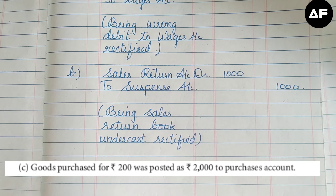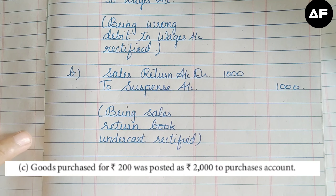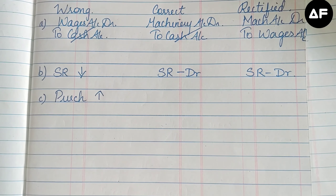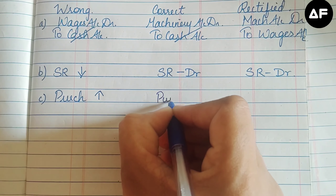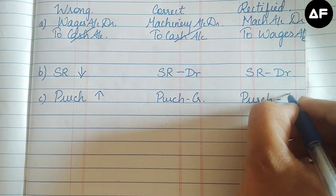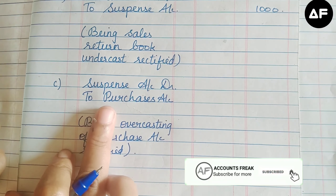The third transaction: goods purchased for rupees 200 was posted as rupees 2000 to the purchase account — an over-casting of rupees 1800. Purchases account naturally shows a debit balance; when it is over-cast, we need to credit it to bring it down. Therefore, the rectification entry uses Suspense Account along with Purchase Account on the credit side.